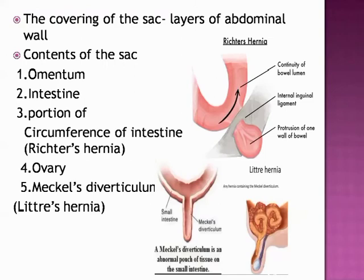The coverings are derived from the layers of the abdominal wall through which the sac passes. In long-standing cases, the covering may become atrophied. The contents may be omentum — in which case it is called an omentocele — or if the hernia sac contains intestine, it is called an enterocele, and this is usually the small intestine.